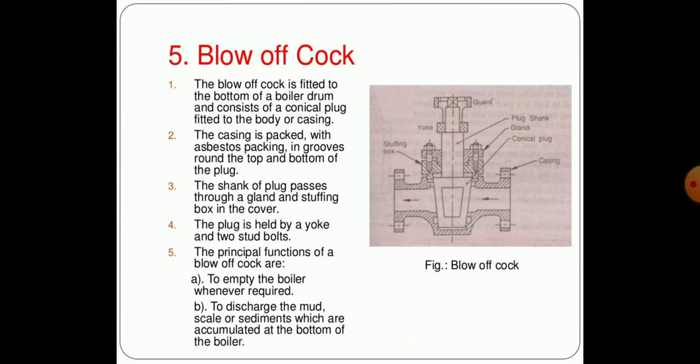Another one is blow off cock. The blow off cock is fitted to the bottom of the boiler and consists of a conical plug which is fitted to the body of the casing. The casing is packed with asbestos packing which goes around the top and bottom of the plug. The shank of the plug passes through the gland and stuffing box in the cover. The plug is held by a yoke and two stud bolts. The principal functions of the blow off cock are to empty the boiler whenever required and to discharge the mud, scale, or sediments which accumulate at the bottom of the boiler.